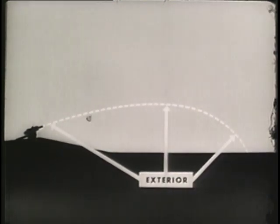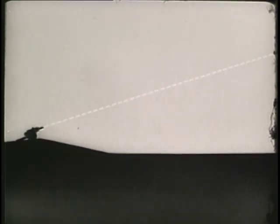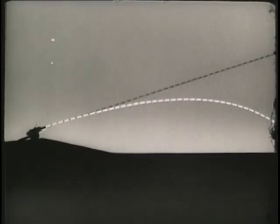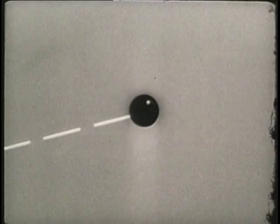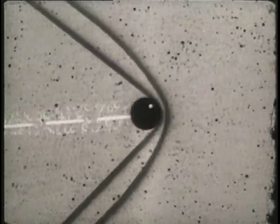Now you're ready to consider exterior ballistics, which is concerned with the behavior of projectiles in flight. If we could fire a cannonball influenced by no outside forces, it would continue forever in its original direction at its original velocity. If we add the force of gravity, the cannonball follows this sort of path or trajectory. By adding air resistance, we get this result, and the range is shortened still more.